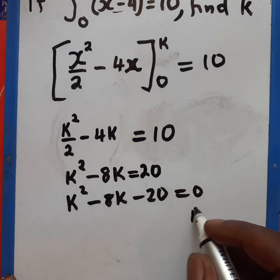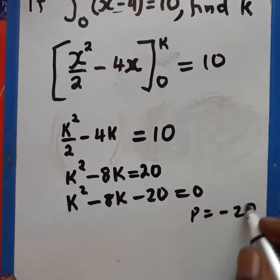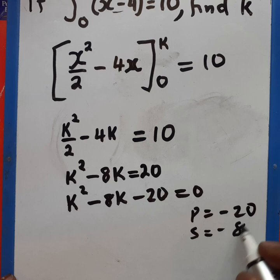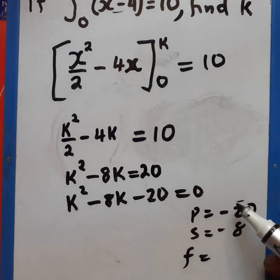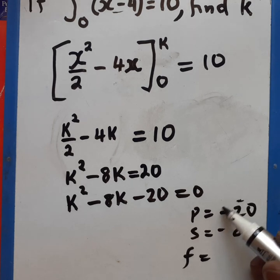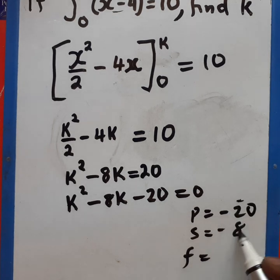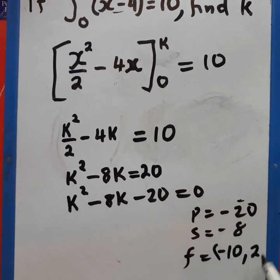So we have our product here, which is negative 20. And we have our sum, which is negative 8. So we want the factors now, the factors of negative 20. But those factors of negative 20 should be such that when we add them, they should give us negative 8. So we are going to have these two as our factors, negative 10 and 2. When we multiply these ones, they'll give us negative 20. And when we add them, they'll give us negative 8.